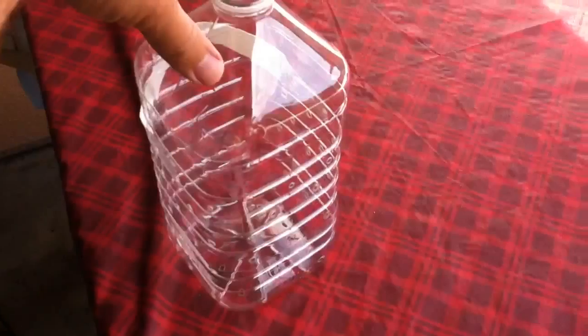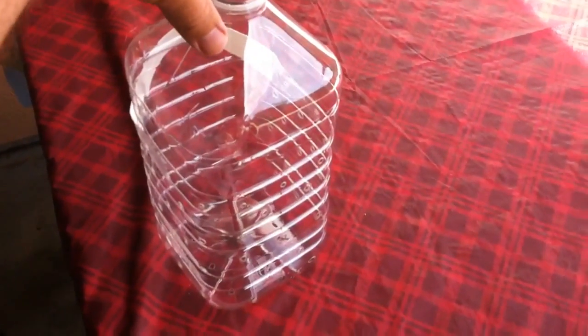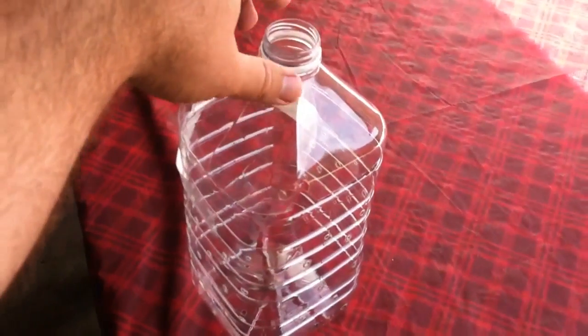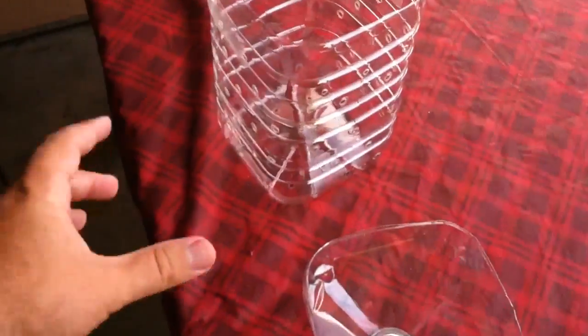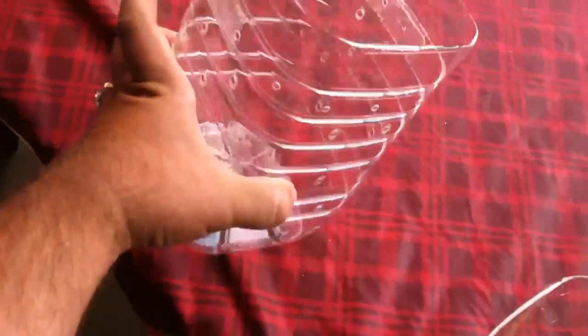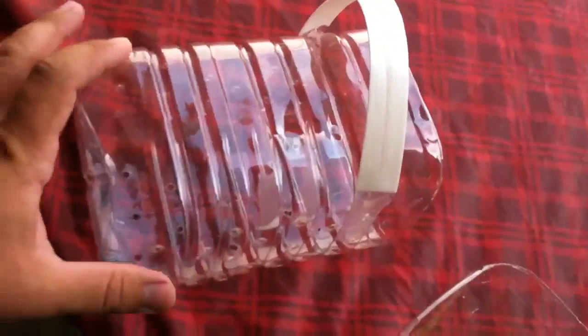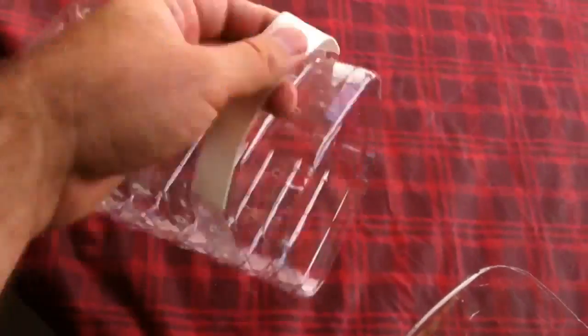Basically what you do is you get a water bottle or a soda bottle, 2 liter, right? You cut the top off. And then, see all the holes in it and stuff? So this is the top because I'm going to basically set it down like this.